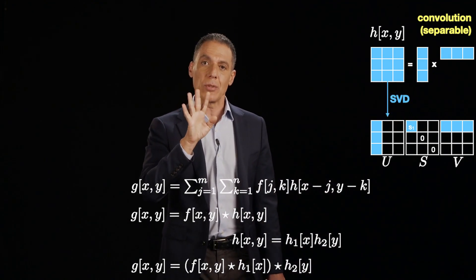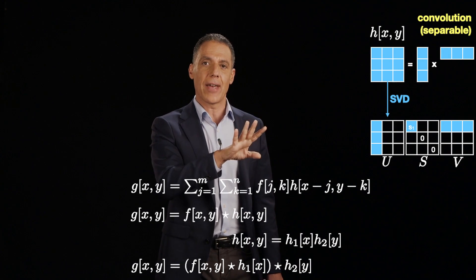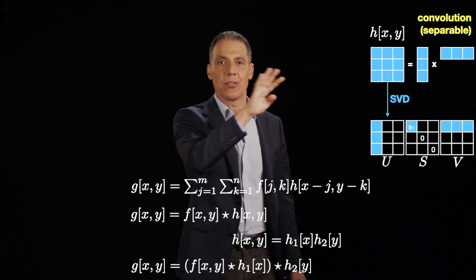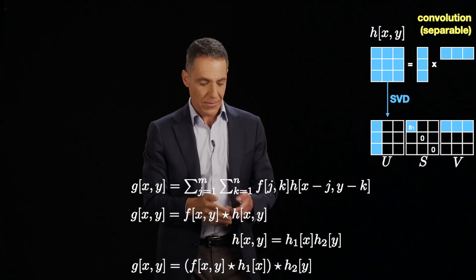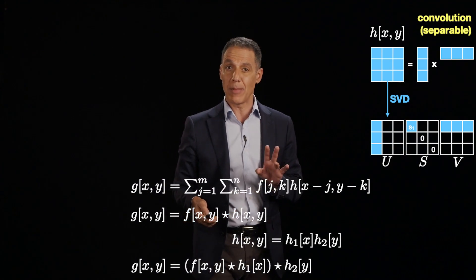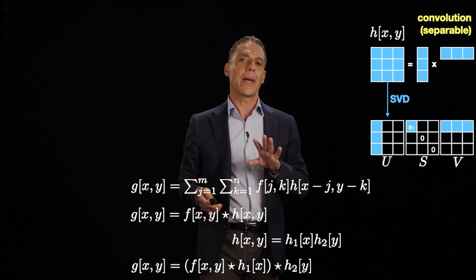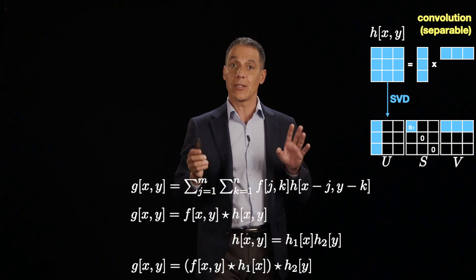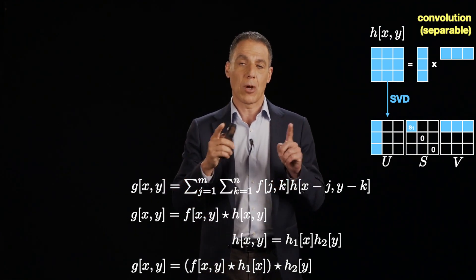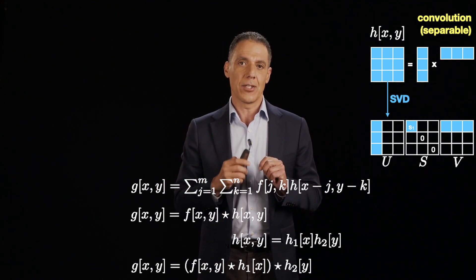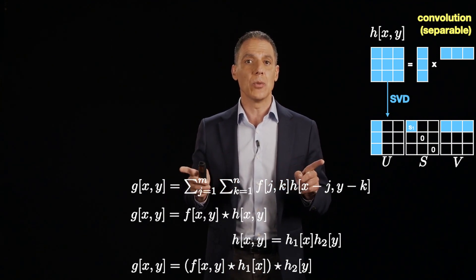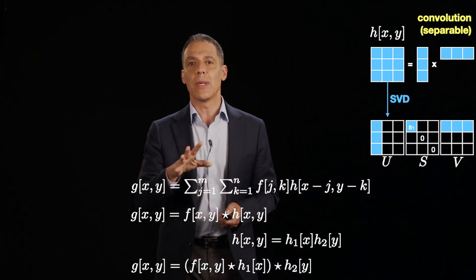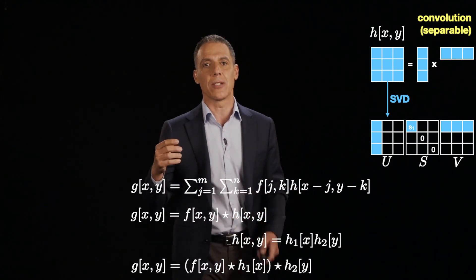So that means I'm only doing 6 multiplications and 5 adds versus 9 multiplications and 8 adds. And now that's not a huge savings for a 3 by 3. But now let's go up. Let's say that my filter was, say, 11 by 11. So now I've got to do 11 cross 11, 121 multiplications and additions compared to 22. The savings become enormous as those unit impulse responses, those filters get bigger.